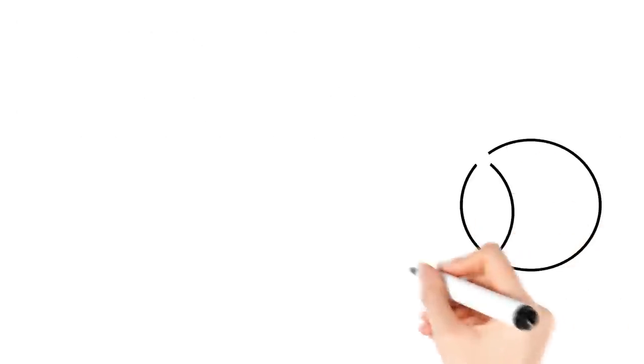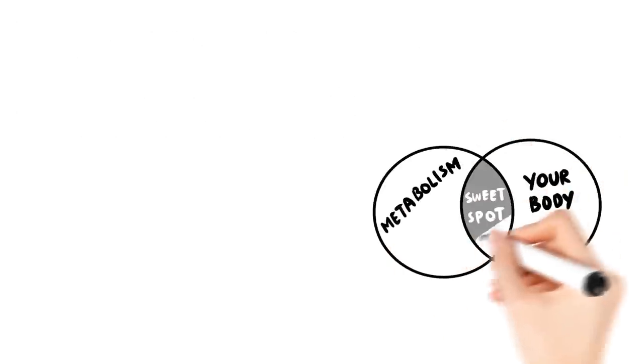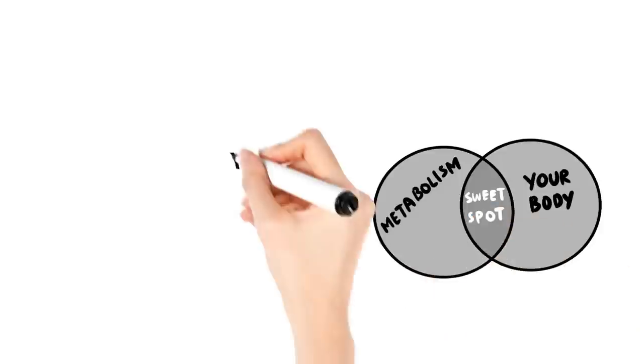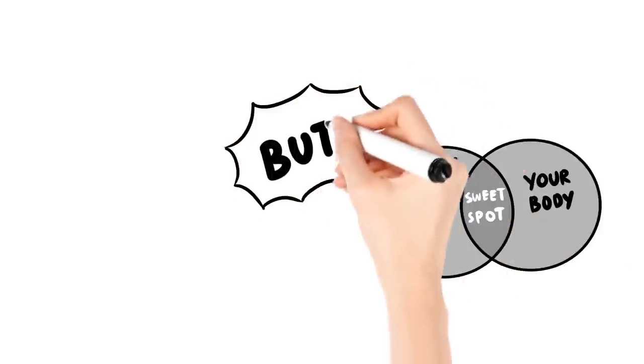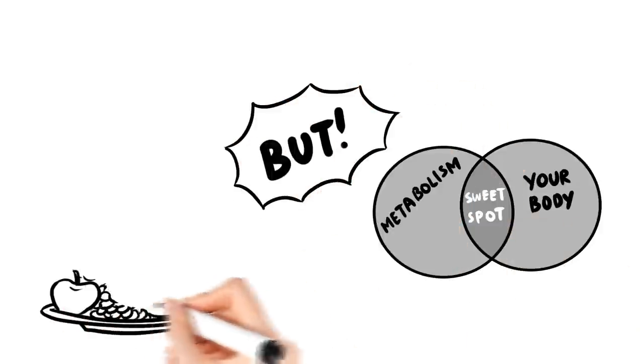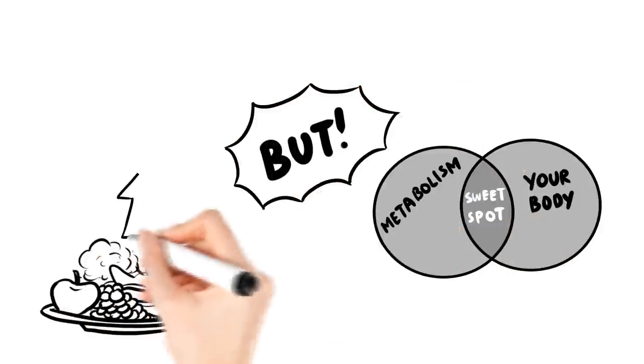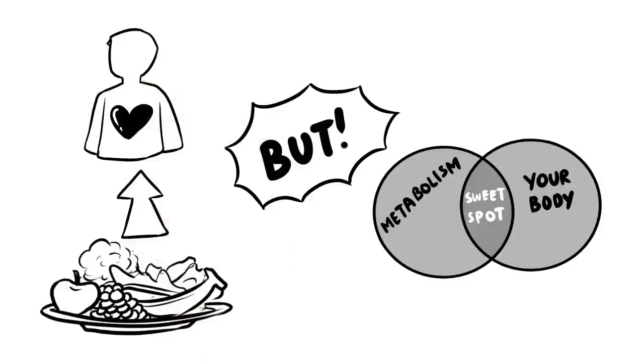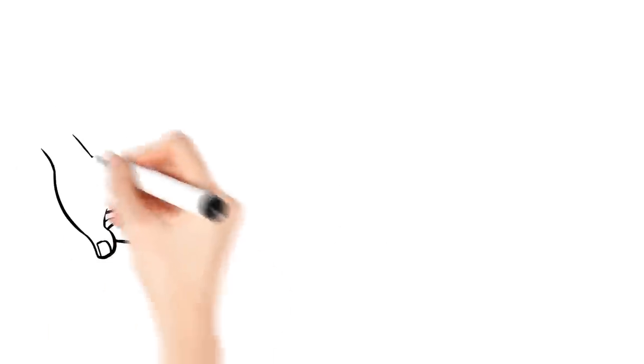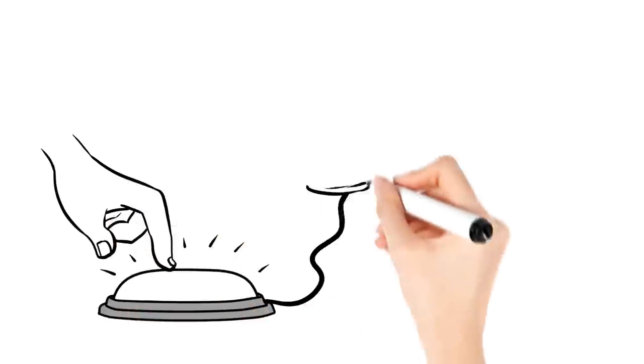In other words, if you aren't following a customized diet that is based on your unique metabolism and body type, you are always going to have a hard time losing weight. But once you discover that sweet spot that corresponds to your unique body and individual metabolism, extremely rapid weight loss happens like a light switch being turned on.